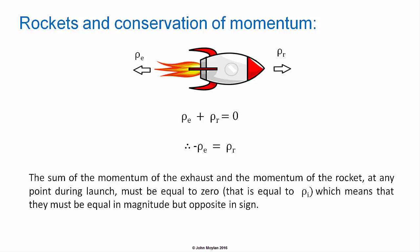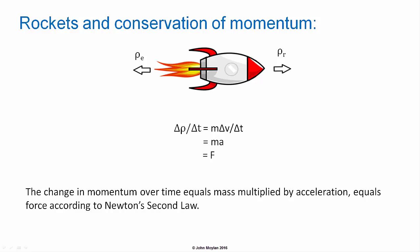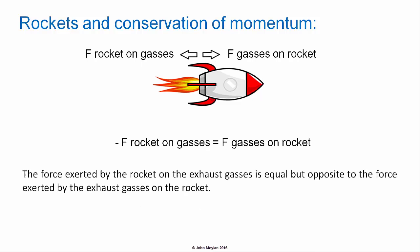The sum of the momentum of the exhaust and momentum of the rocket at any point during launch must be equal to zero — equal to rho initial, the initial momentum. This means that they must be equal in magnitude but opposite in sign. So the momentum of the exhaust is equal in magnitude to the momentum of the rocket but opposite in sign because it's in the opposite direction. The change in momentum of the exhaust gases over time must also be equal to the change in momentum of the rocket over time. Change in momentum over time is equal to force, because M delta V over delta T is the same as writing M times A, mass times acceleration, and that is equal to force according to Newton's second law.